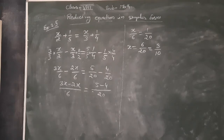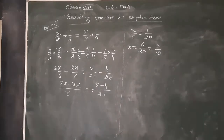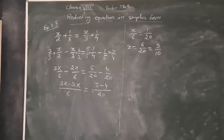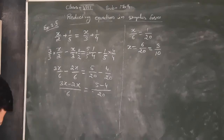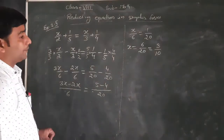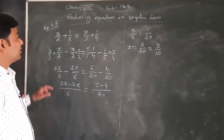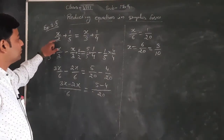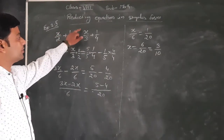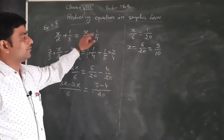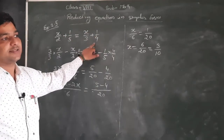Hello students. Today in Class 8 we are starting Exercise 2.5, in which we have reducing equations in simpler form. In this part we do not have the equation in simpler form — it is in fractional form like x/2 + 1/5 = x/3 + 1/4. It is not a simple equation.